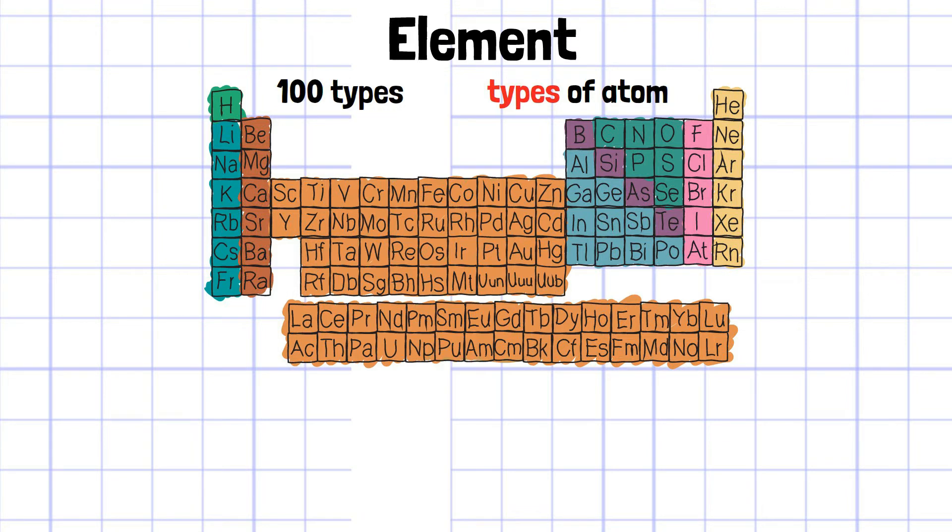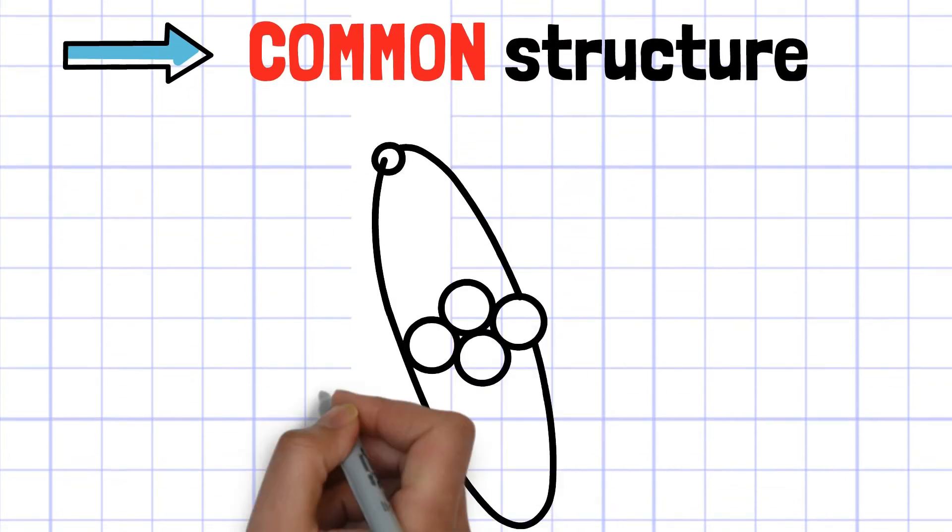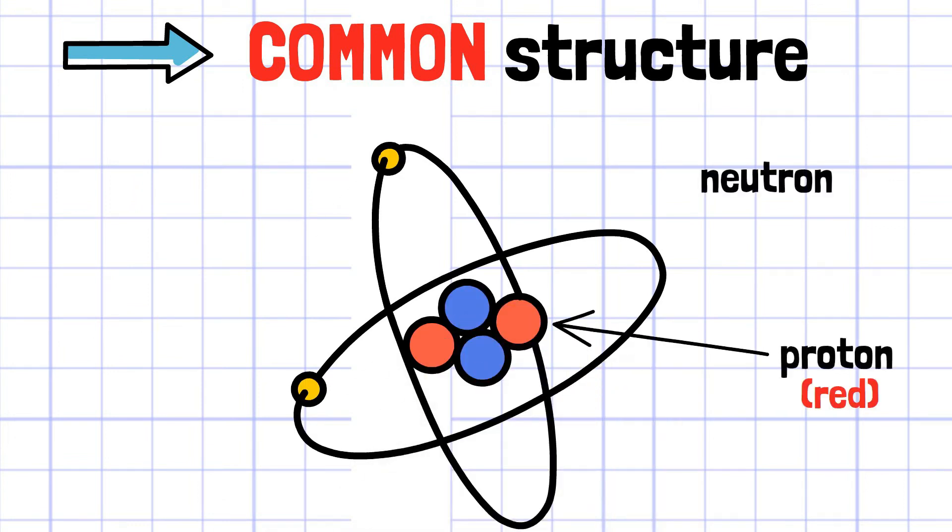Although there are over 100 types of elements, all of them have common structures. They are all composed of protons, neutrons, and electrons. But each element differs in the number of these three particles, so they become a distinct element from another.